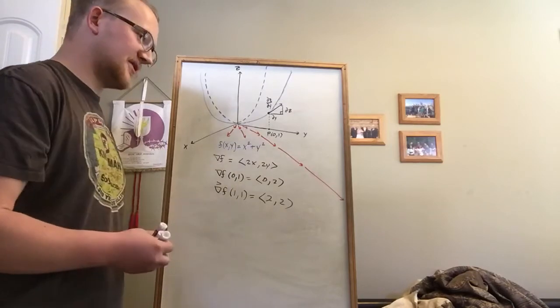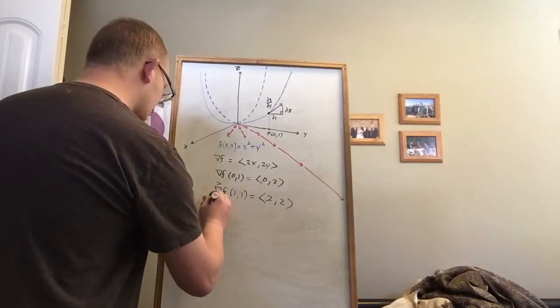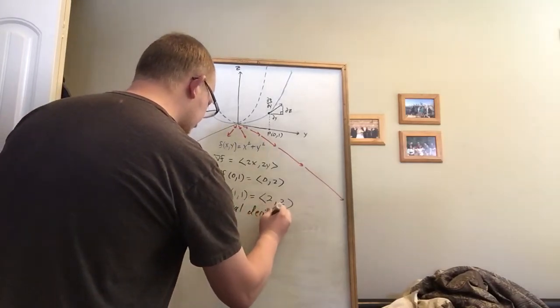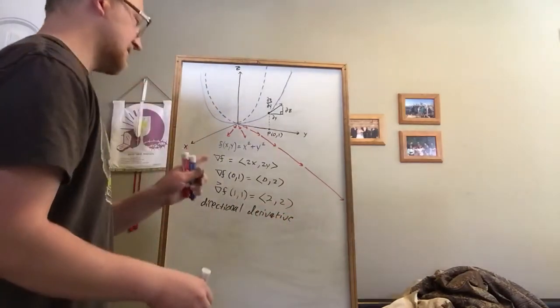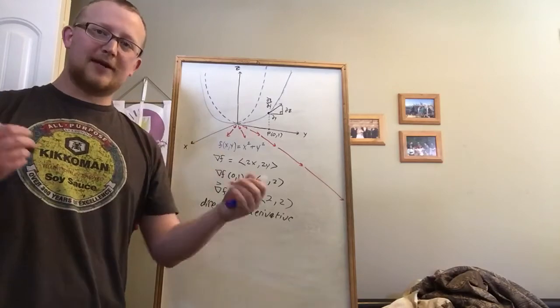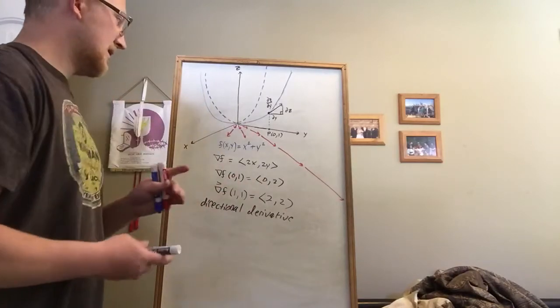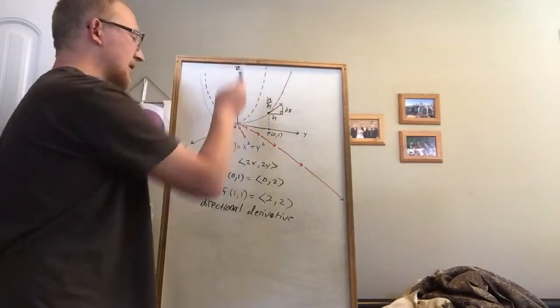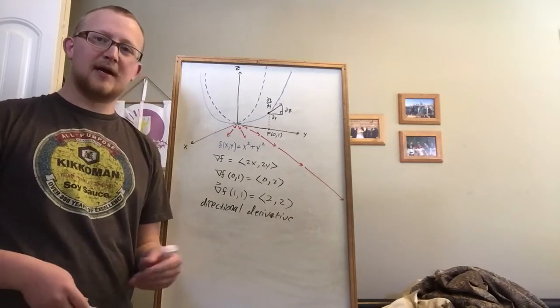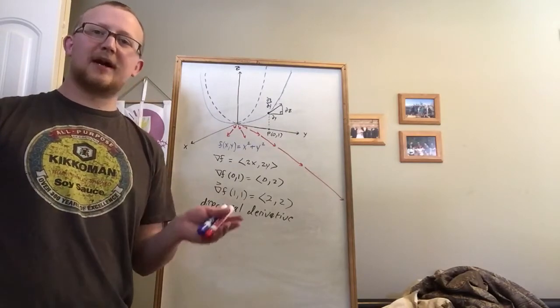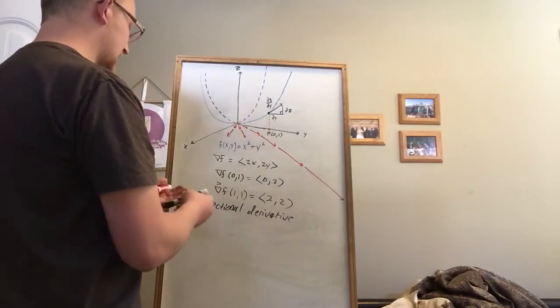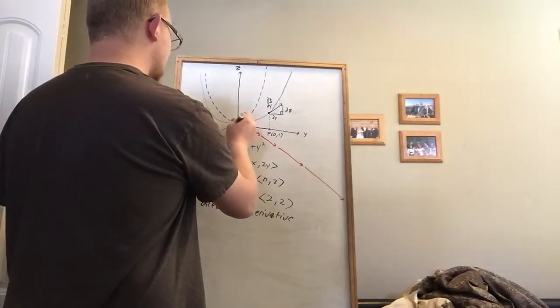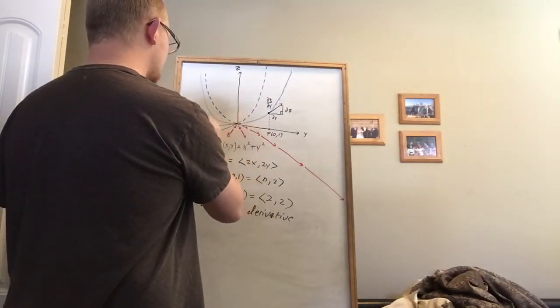One of those derivatives is called the directional derivative. And what this does for you is you can pick a direction. So that's the fastest way to get up. Well, what if we don't want to go the fastest way, but we want to figure out what the rate of change is when we're going up some other path. So let's say that we pick a direction of travel. Let's say that we want to travel in this direction.